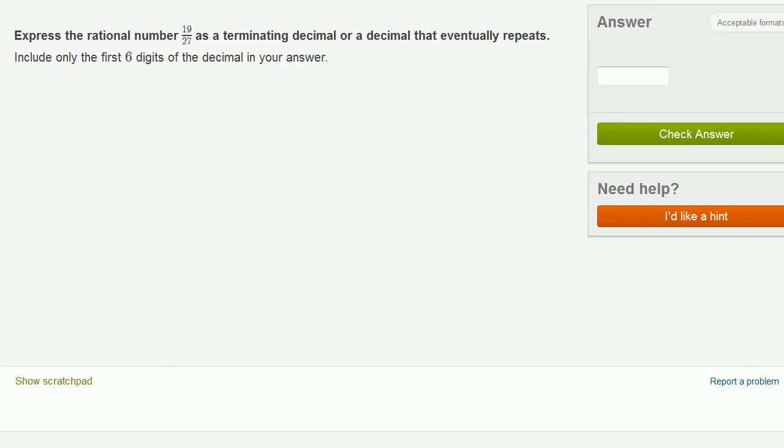Let me give this a shot. We want to express 19 over 27, which is the same thing as 19 divided by 27 as a decimal. So let's divide 27 into 19. 27 going into 19. We know it's going to involve some decimals over here,